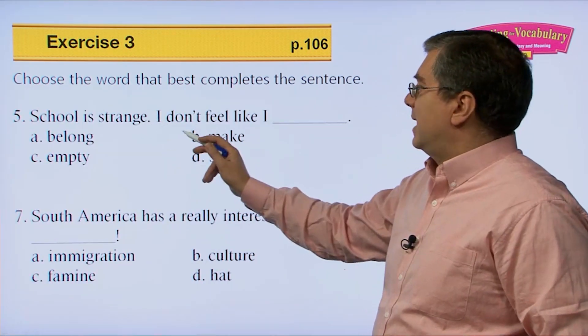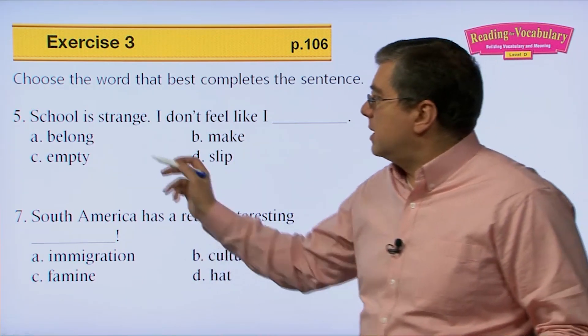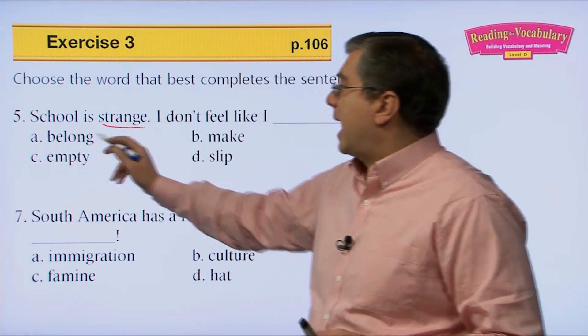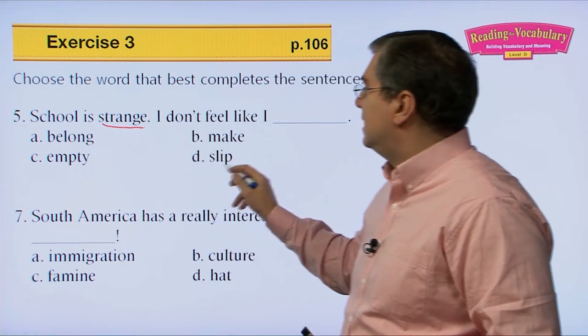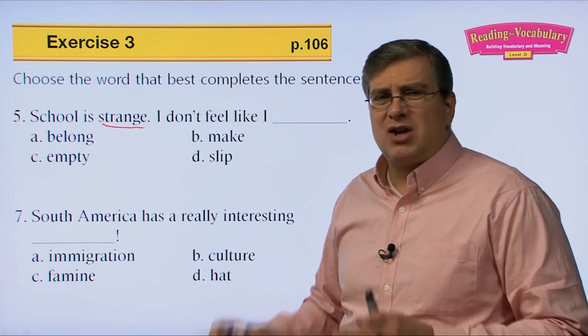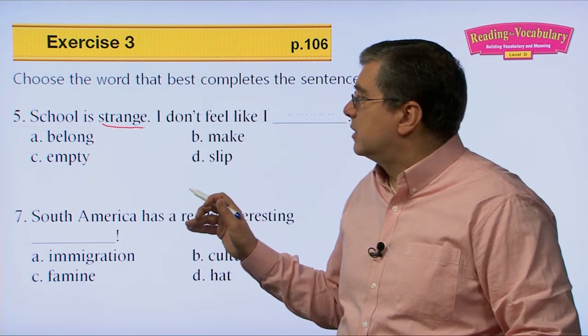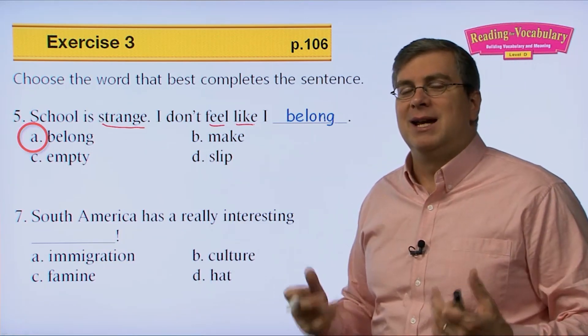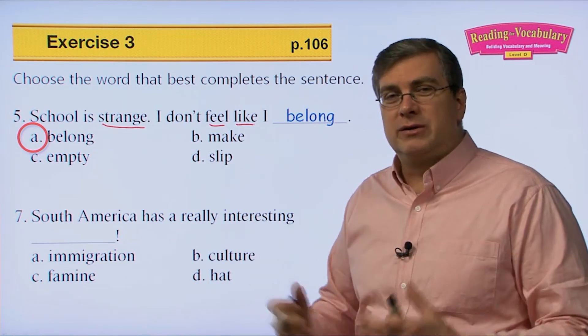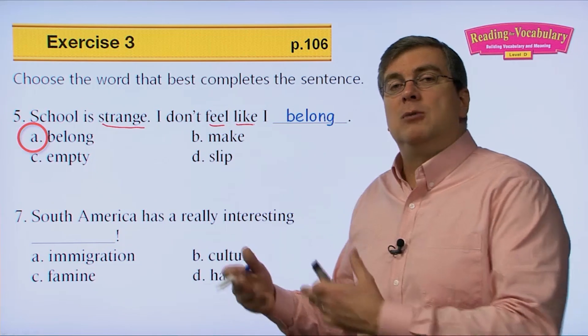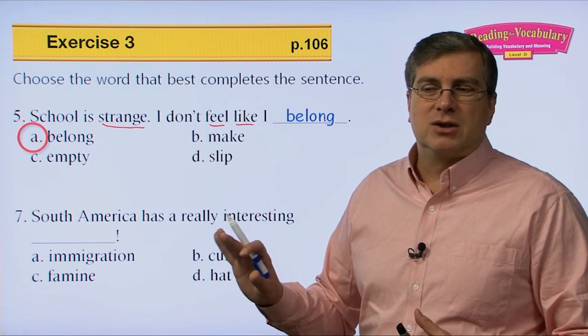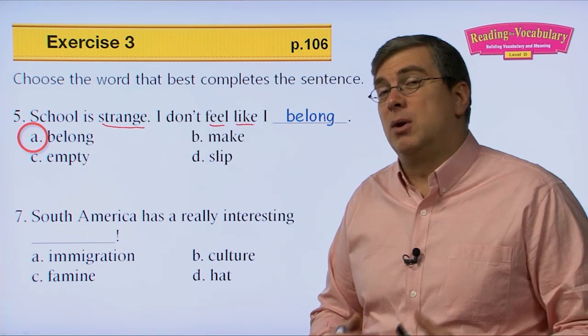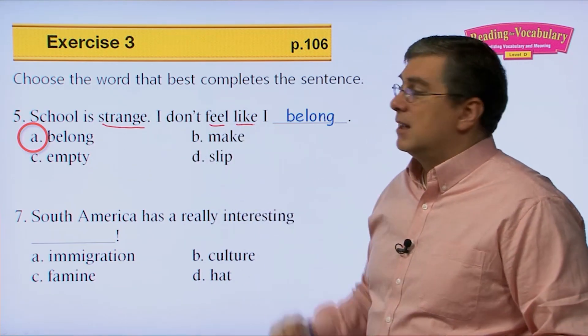Five. School is strange. I don't feel like I what? I don't feel like I, if you think school is strange, you don't what? I don't feel like I what? I don't feel like I, A, belong. B, make. C, empty. D, slip. So if you think someplace is strange or a group of people is strange, you don't fit in. You don't belong. I don't feel like I belong. Maybe you do belong, but you don't feel like I belong. That's too bad. You have to make some friends. If you make friends, you get used to the people there, you find out, oh, they're good people. Then you feel like you belong in a place. But if you feel strange about the people you're with, you don't feel like you have anything in common. It's hard to talk to them. Then you feel like you don't belong.